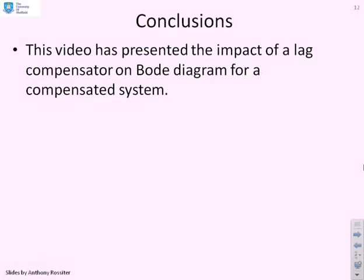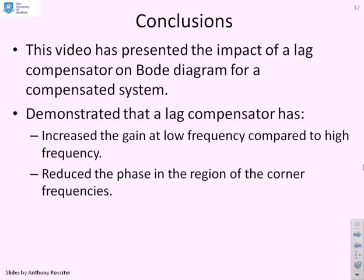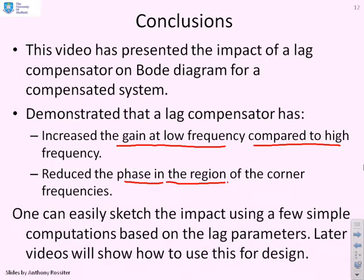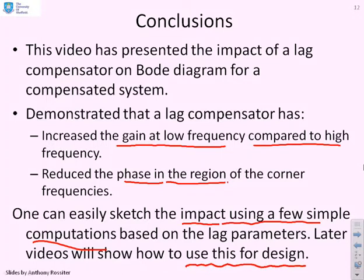In conclusion, this video has presented the impact of a lag compensator on the Bode diagram for a compensated system. A lag compensator increases the gain at low frequency relative to high frequency, but reduces the phase in the region of the corner frequencies. You can easily sketch the impact using a few simple computations: the gain equivalents of K and K·beta, the phase at the corner frequencies, and the geometric mean of the corner frequencies. Later videos will show how to use this more systematically for design.